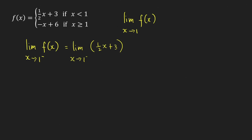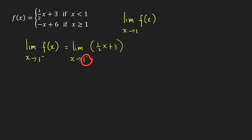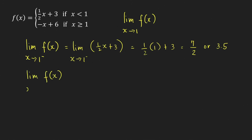We use the same limit theorems as for two-sided limits — all those theorems can be used for one-sided limits. This is just a polynomial, and the limit of a polynomial is simply the function value at that point. So we plug in 1 for x and get (1/2)(1) + 3 = 1/2 + 3 = 7/2, or 3.5.